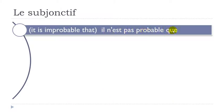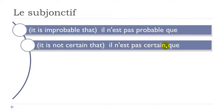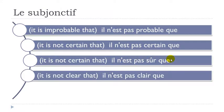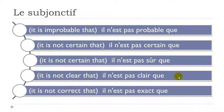Let's continue: il n'est pas probable que, il n'est pas certain que, il n'est pas sûr que, il n'est pas clair que, il n'est pas exact que. After all these expressions you will have to use le subjonctif.